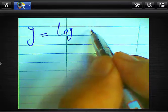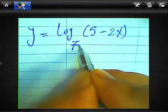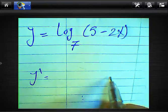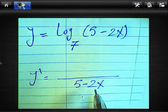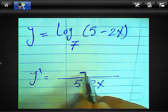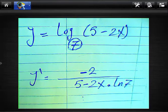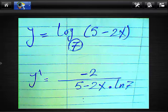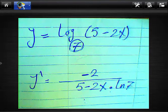Another example: y equals log base 7 of (5 − 2x). We write the expression (5 − 2x) in the numerator. The derivative of this expression is −2, and we write ln(7) in the denominator. So the result is y' = −2 over ((5 − 2x) · ln 7).